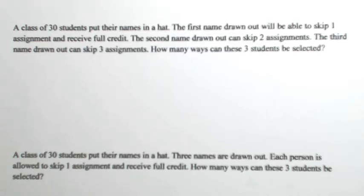A class of 30 students put their names in a hat. The first name drawn out will be able to skip one assignment and receive full credit. The second name can skip two assignments. The third name can skip three assignments. How many ways can these three students be selected?